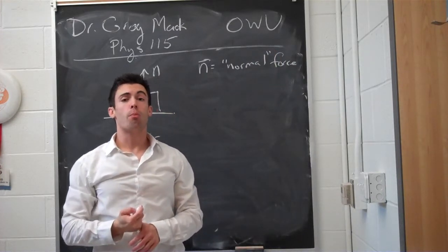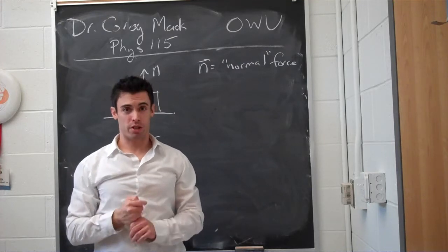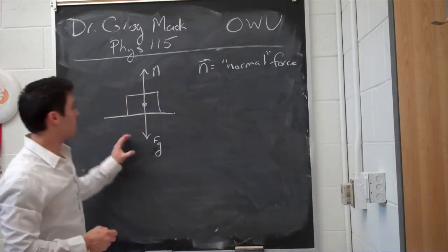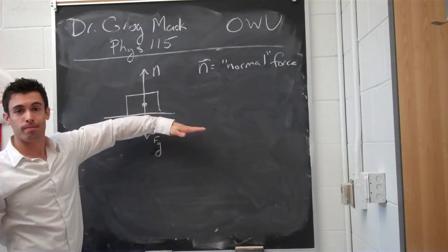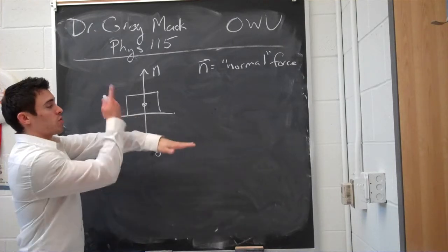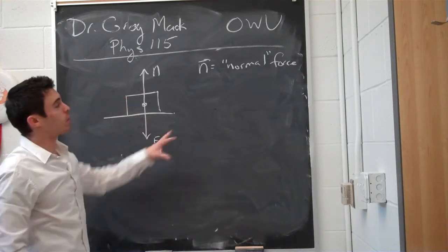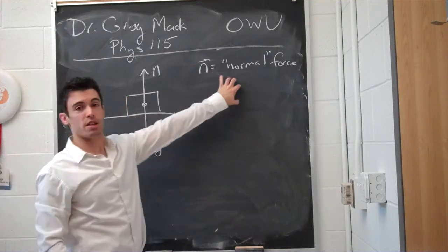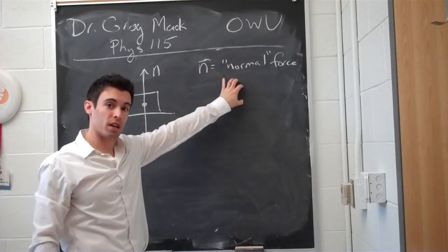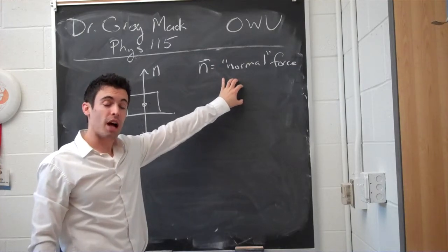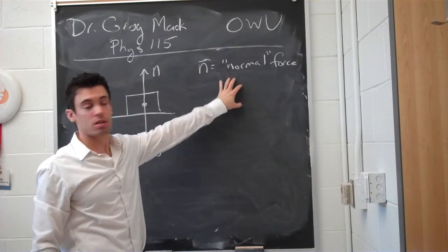The normal force is not named because it is usual — it's named because we're talking about the normal to a surface. It is directed perpendicularly from the surface. Here, the surface is flat, so the perpendicular to that surface is a straight line up. An object will only have a normal force if it is in contact with some other surface.